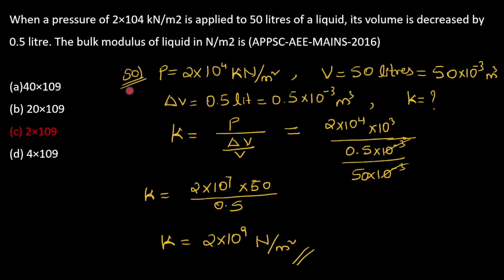Next question: when a pressure of 2×10⁴ kilonewton per meter square is applied to 50 liters of a liquid and its volume is decreased by 0.5 liter, find the bulk modulus in newton per meter square. Given: pressure = 2×10⁴ kN/m², volume = 50×10⁻³ m³, volume decrease = 0.5 liter. Using the formula k = pressure / (change in volume / original volume), you get 2×10⁹ newton per meter square. Option C is the correct answer.